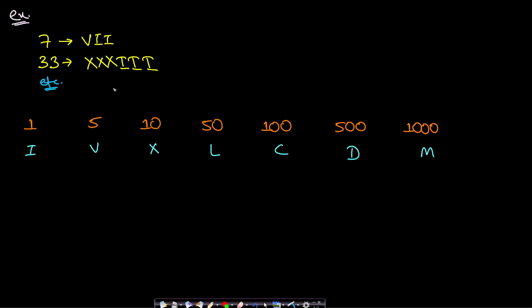This is a very straightforward problem in which you are given a decimal number which you need to convert to a Roman number representation. The Roman notations given correspond to 1, 5, 10, 50, 100, 500, and 1000, which are I, V, X, L, C, D, M. Any number can be represented in Roman format, but there is a catch.